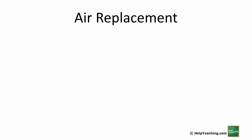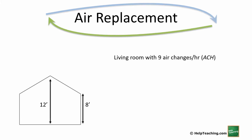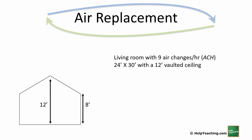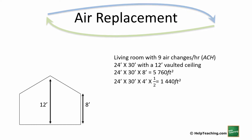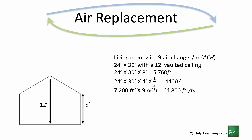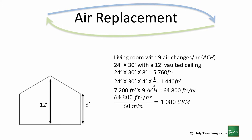Next is a living room with 9 air changes per hour. The room is 24 by 30 feet with a 12-foot vaulted ceiling, meaning it is open to the peak of the roof. First we calculate the bottom 8 feet as a rectangular prism: 24 times 30 times 8 equals 5,760 cubic feet. Then we handle the vaulted triangular piece at the top — same area but 4 feet high (since 8 plus 4 equals 12), divided by 2 as it's a triangle, giving 1,440 cubic feet. Adding the two together gives 7,200 cubic feet. Nine air changes gives 64,800 cubic feet per hour, and dividing by 60 gives 1,080 cubic feet per minute.